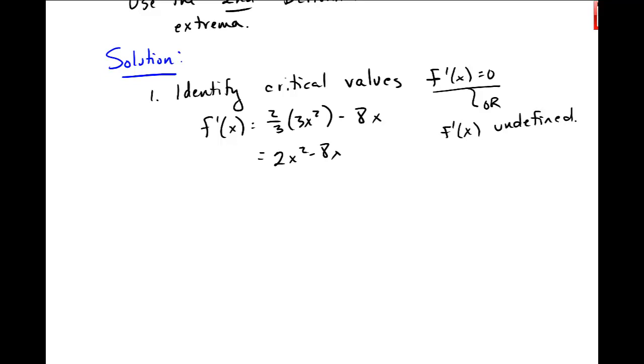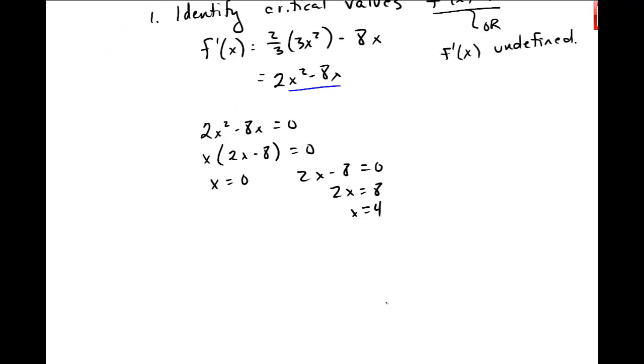Now when I look at this function, I have this nice polynomial function here. So there's no place where f prime is undefined, but it could be zero. So I'll set it equal to zero. And solve. And I get x equals zero. And x is equal to four. Okay? So I want to, those are my two critical values.